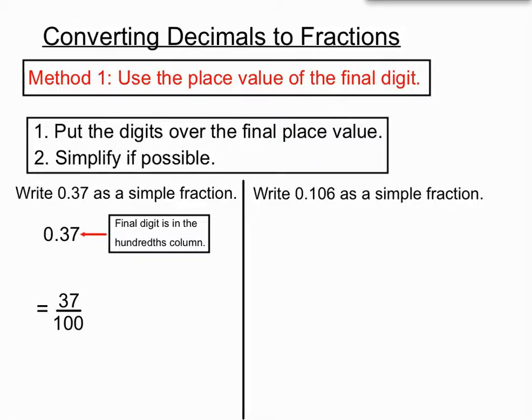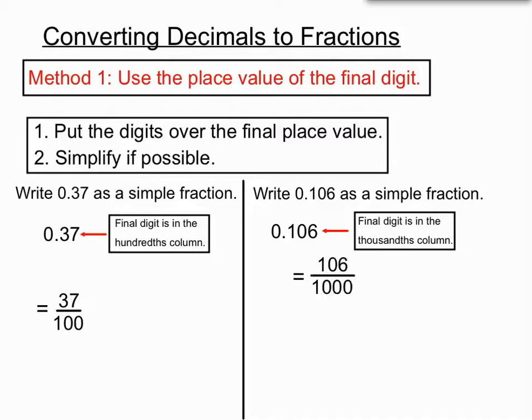Second example: write 0.106 as a simple fraction. We're going to check out what column that final digit is in. We're going to write that 106 over 1000 for our fraction. Now, 106 over 1000 is a fraction but it's certainly not the simplest fraction we can get.